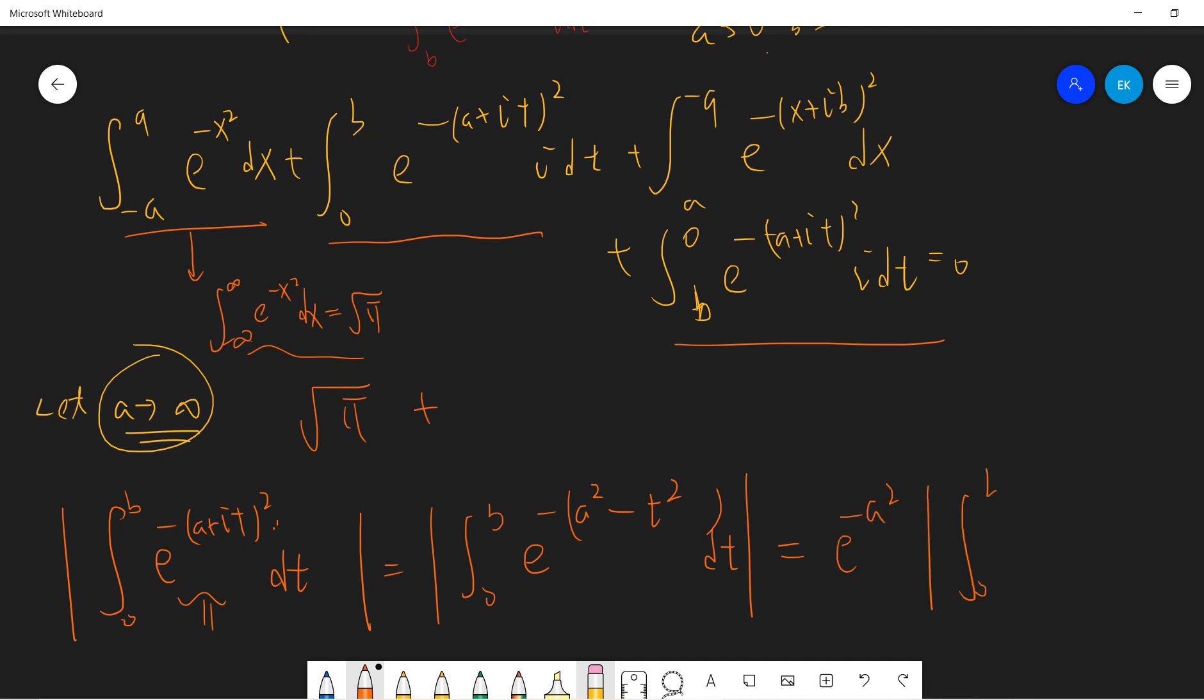It must be the absolute value from zero to b of exponential t squared dt, and I don't care because for fixed b, once you fix b, then this is just constant. So as a goes to infinity, this term will go to zero.